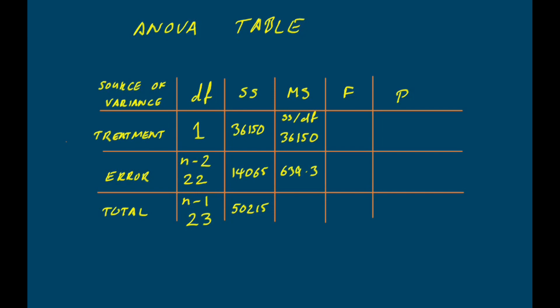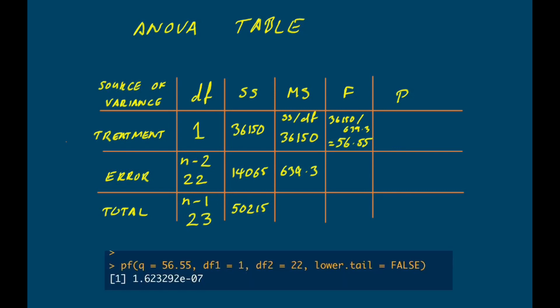Now that we have the mean square treatment and mean square error, we can calculate our F statistic. The F statistic equals treatment mean squares divided by error mean squares: 36,150 divided by 639.3, which equals 56.55. If the null hypothesis is true, that value should be distributed on an F distribution with 1 and 22 degrees of freedom. We ask R for the probability of getting a value as large as 56.55 on that distribution, and the answer is 1.623 times 10 to the minus 7 — a p-value of 0.000000162 — so we have a highly significant linear regression.